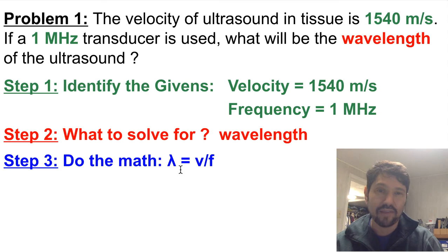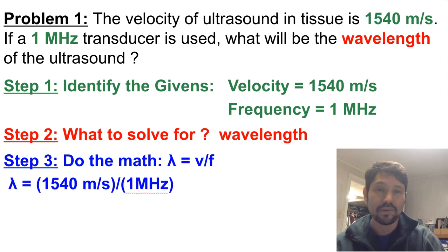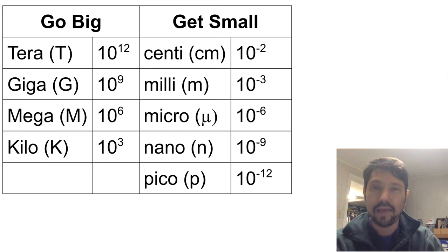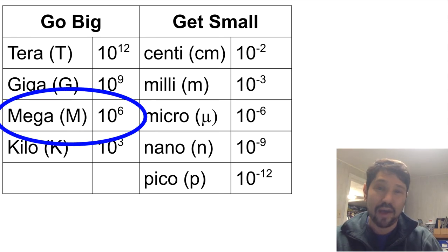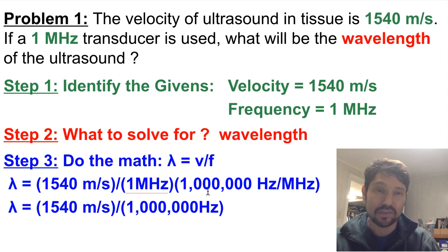So wavelength equals velocity divided by frequency: 1540 m/s divided by 1 MHz. What's a megahertz? Something that hurts a whole lot. Megahertz is 10⁶ hertz or a million hertz, as shown by the numeric prefix charts that we know and love and memorized. So we're going to put in 1,000,000 hertz. Megahertz will drop out and hertz will be the units that we want there. So we've got 1540 m/s divided by a million hertz.